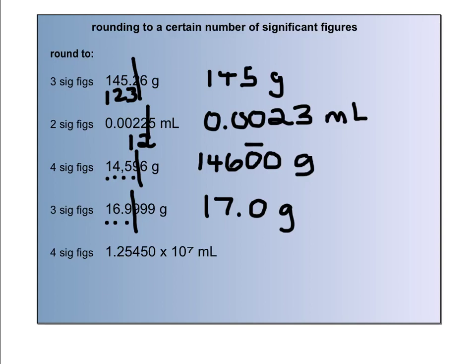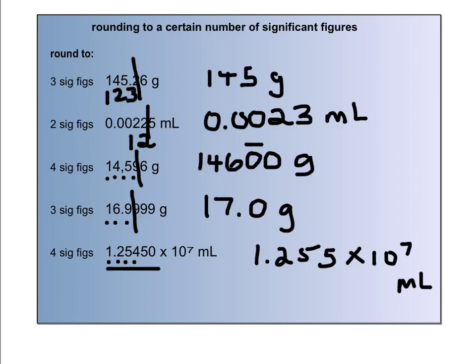And finally, rounding numbers in scientific notation — just look at the coefficient part. There's no need to take the number out of scientific notation. We want four significant figures — one, two, three, four — that's where we cut it. We get 1.25, and then we're going to make the four a five because there is a five next to it. Don't forget the rest of the number: times ten to the seventh, and the units.